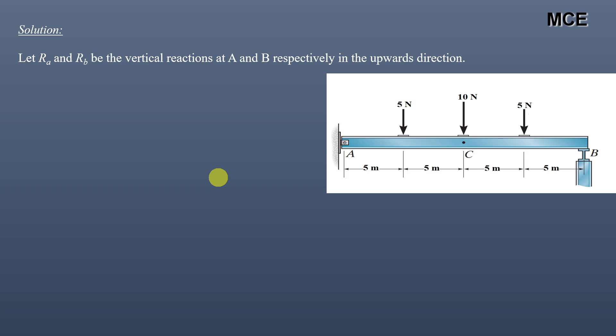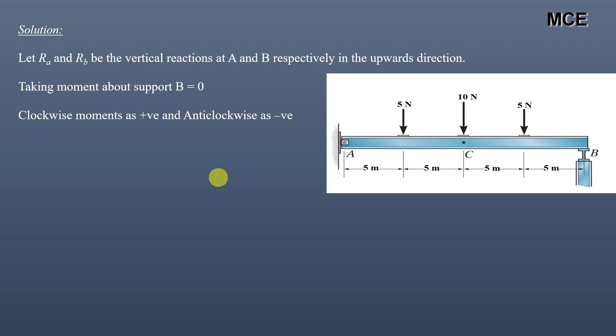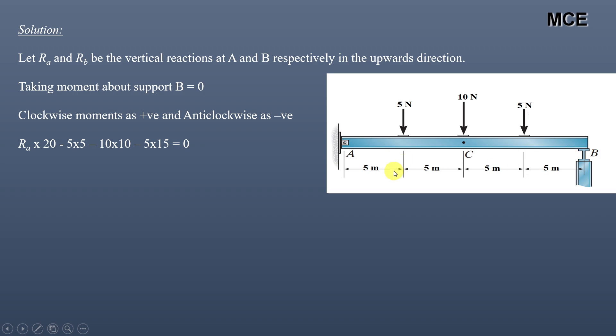For our question, we will first find the reactions for the beam to draw the bending moment diagram. Let Ra and Rb be the vertical reactions at A and B respectively, acting upward. Taking moments about support B equal to zero, assuming clockwise moments are positive and anti-clockwise moments are negative.